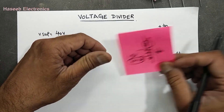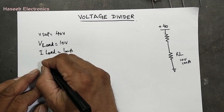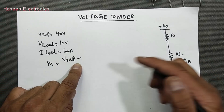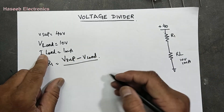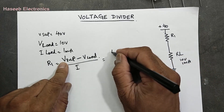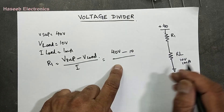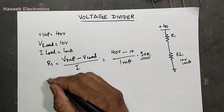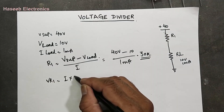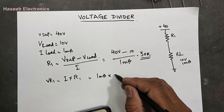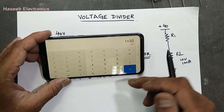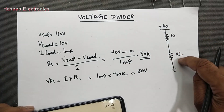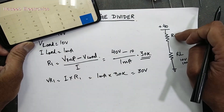We need 1 milliampere, so we calculate R1: R1 = (V_supply − V_load) / I = (40 − 10) / 0.001 = 30 kilo-ohm. We can verify: V_R1 = I × R1 = 1 milliampere × 30 kΩ = 30 volts drop across R1. So 10 volt remains and drops across RL. This is a good working condition — the resistor is correctly calculated and 10 volts appears across the load.